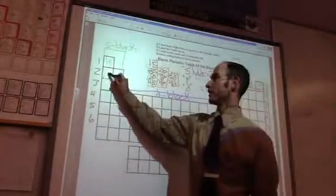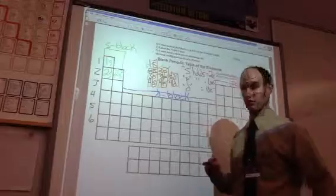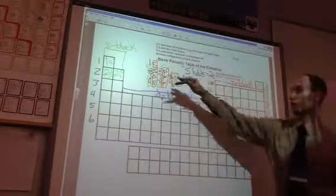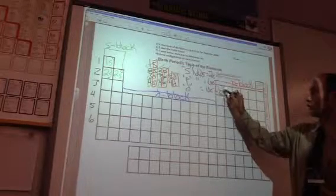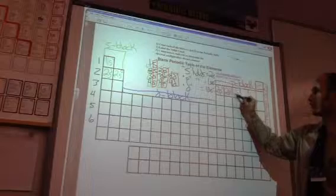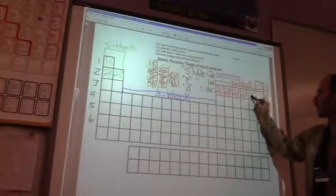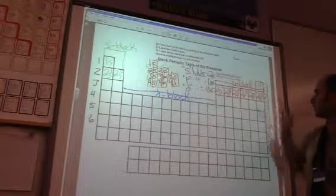So, this one here is 2S1, 2S2, right? I'm in row two, two, so energy level two. This is the first one, 2P1, 2P2, 2P3, 2P4, 2P5, 2P6.